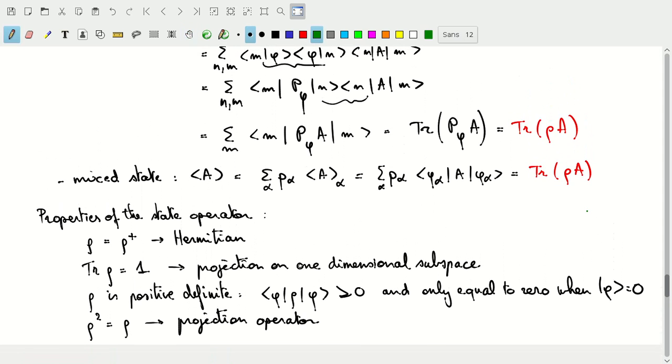So, there are several properties that this state operator has already based on the definition. You can see it's Hermitian. It's got a trace that is equal to one. In particular, for the case of a pure state, you can immediately see that because it's a projection operator onto a one-dimensional subspace. Why is it a projection operator? While we go back to the last property that's listed here, so rho squared is equal to rho.